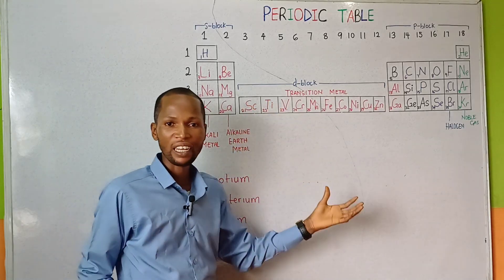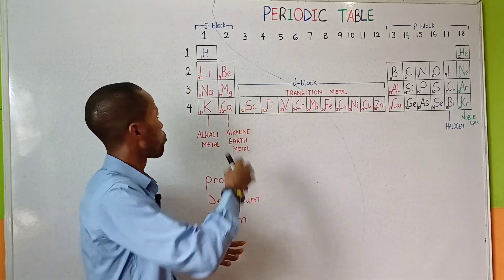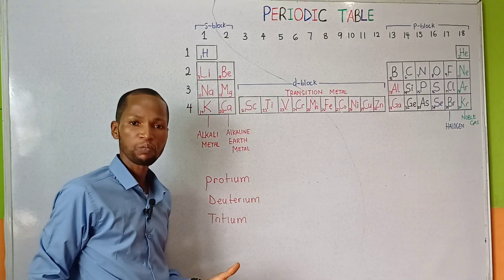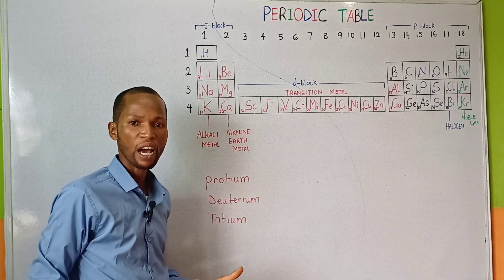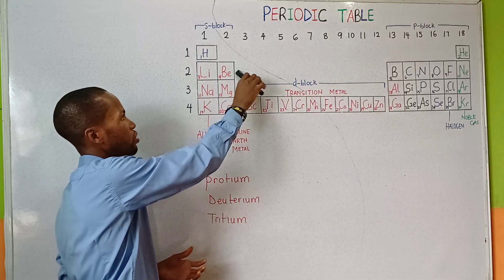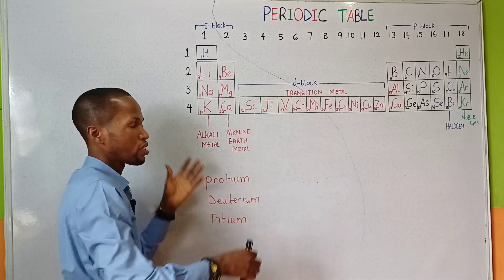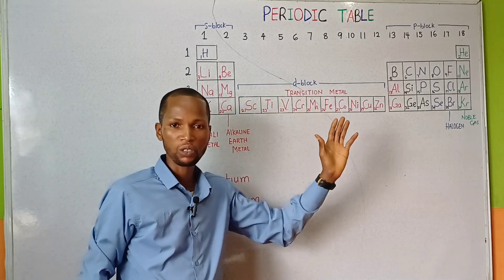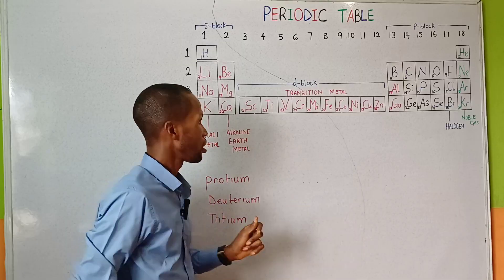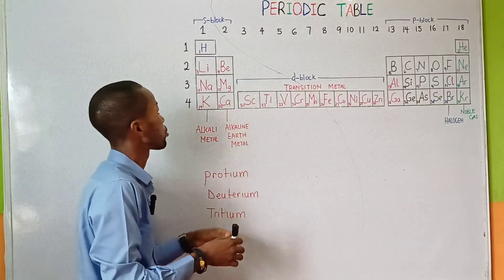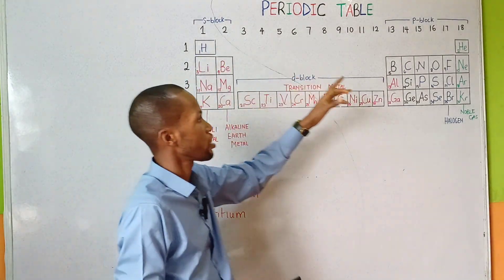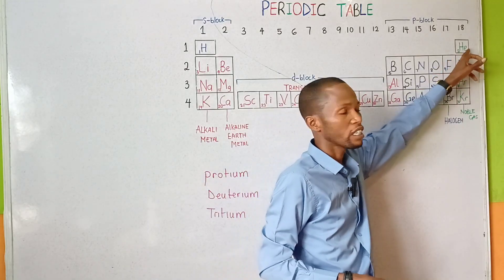In this class we are going to be considering just 4 out of the 7 periods: period 1, period 2, period 3, and period 4. The first period contains 2 elements, that is hydrogen and helium.